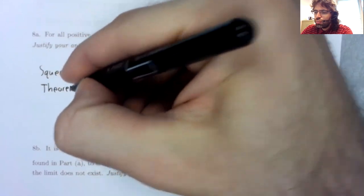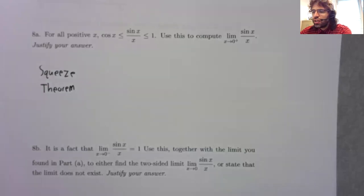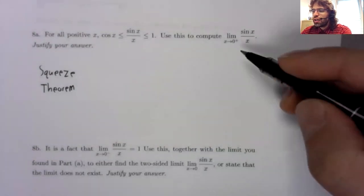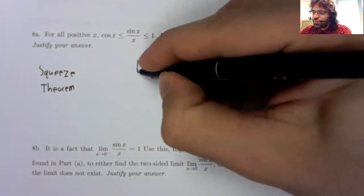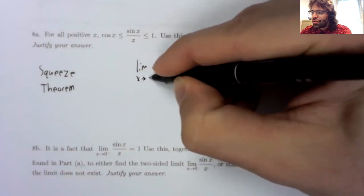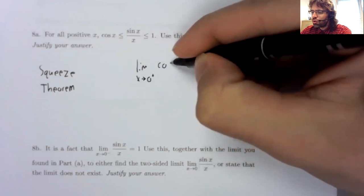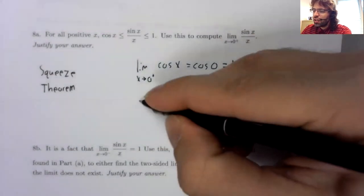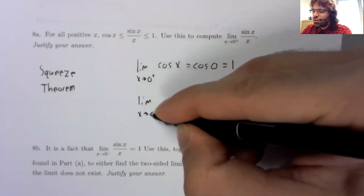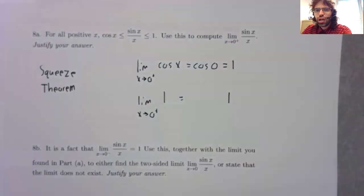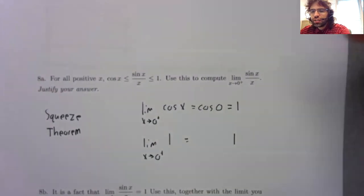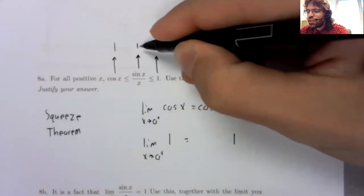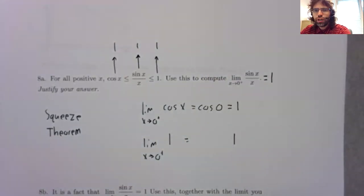It's the squeeze theorem that says that if one function is stuck between two other functions, and you're trying to take a limit, and the limit of the smaller function and the limit of the bigger function are the same—that is to say, this is going to one and this is going to one—then the function stuck between them is also going to one.